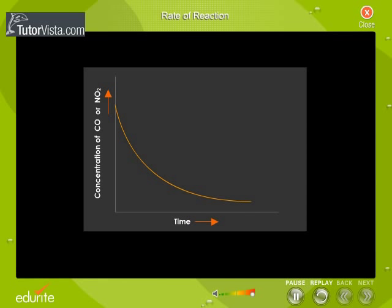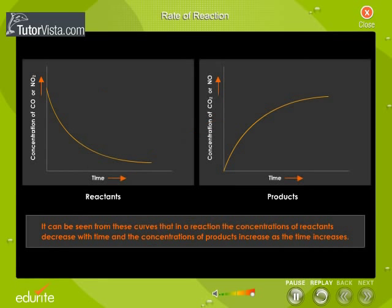If you plot a graph between the concentration of carbon monoxide or nitrogen dioxide versus time, you would get a graph as shown here. Similarly, if you plot a graph between the concentration of carbon dioxide or nitric oxide versus time, you will get a graph as shown here. It can be seen from these curves that in a reaction, the concentrations of reactants decrease with time and the concentrations of products increase as time increases.